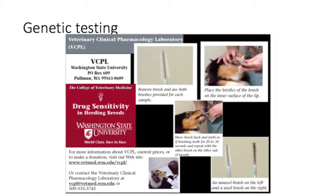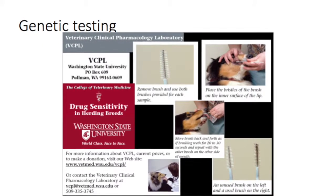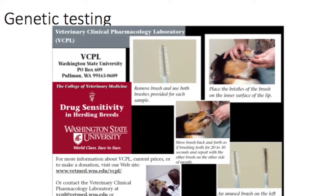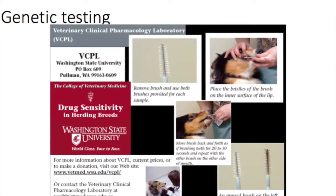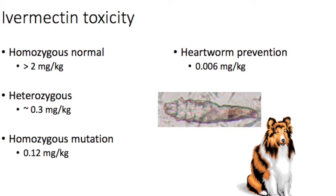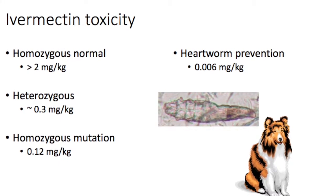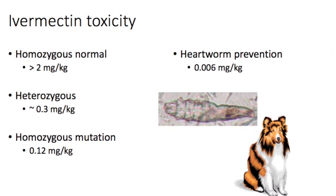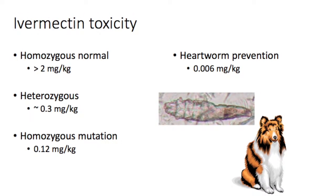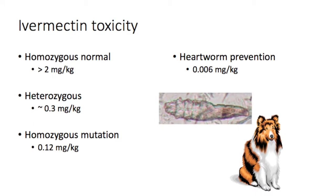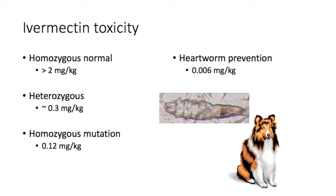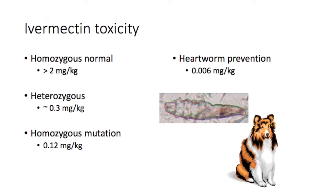Luckily, genetic testing for the mutation is available and is routinely done at Washington State University. It is important to remember that ivermectin can still potentially be used in dogs with the mutation, but they are much more susceptible to toxicity at significantly lower doses.